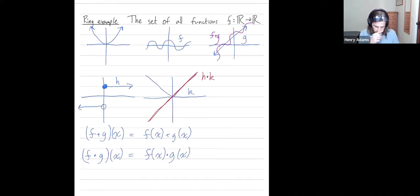Now I don't necessarily have multiplicative inverses. I do have a multiplicative identity, which is this function that's always one. If I take any function and point-wise multiply it by this function that's always one, I don't change anything.